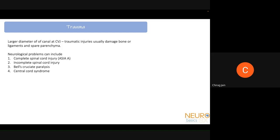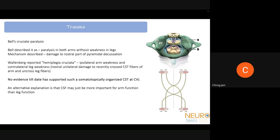Two important phenomena ascribed to CV junction pathologies include Bell's cruciate paralysis and central cord syndrome. Central cord syndrome is quite well known — it is involvement of the upper limbs more than the lower limbs. Bell's cruciate paralysis is a specific phenomenon described for CV junction pathology. Bell described it as paralysis in both arms without weakness in the legs, quite similar to central cord syndrome.